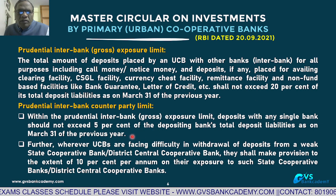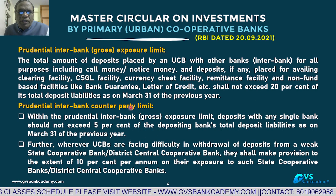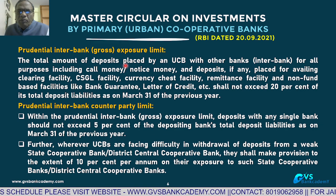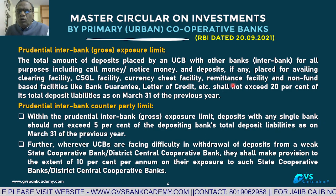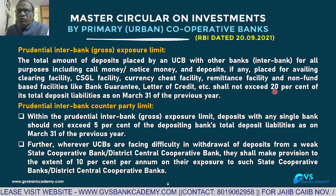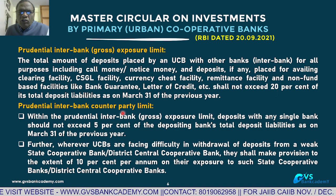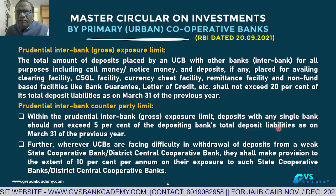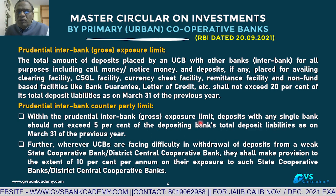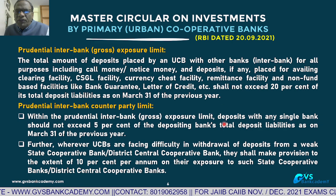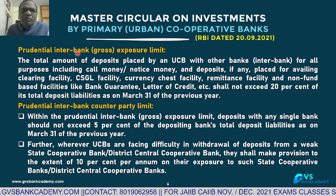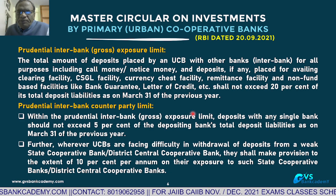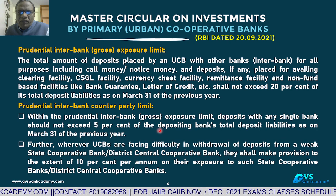There is a separate counterparty limit: within the overall prudential interbank limit of 20%, deposit with any single bank shall not exceed 5% of the bank's total deposits. Because so many banks are facing problems today, these limits are very helpful for the management of urban cooperative banks. Total overall: 20%; with any particular bank: maximum 5%.